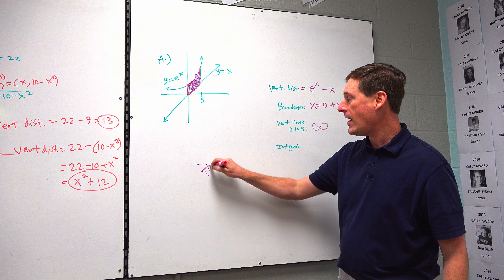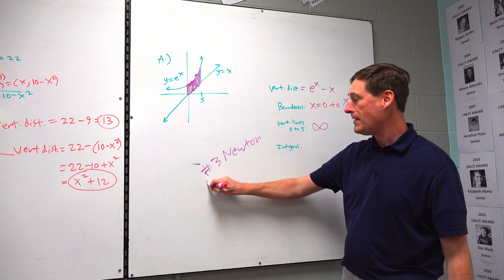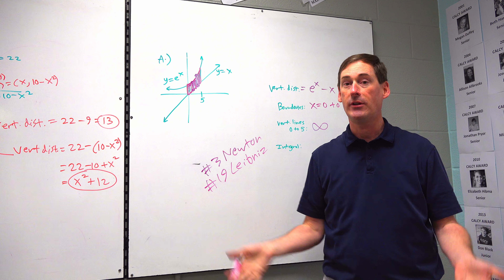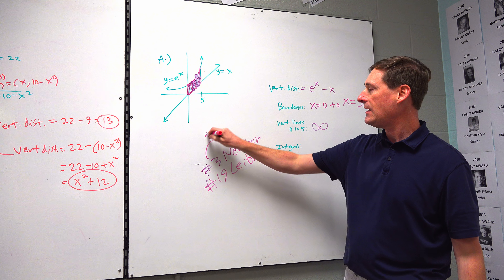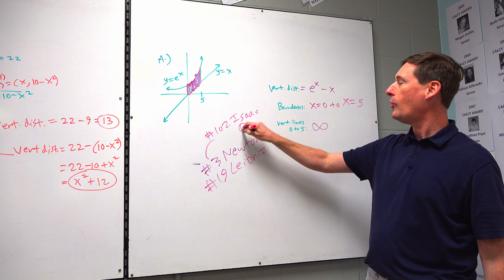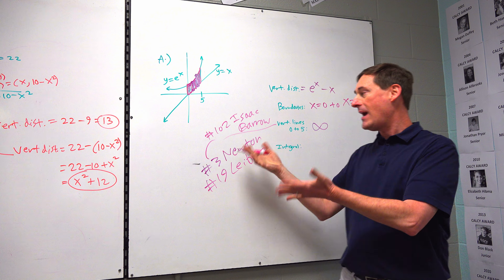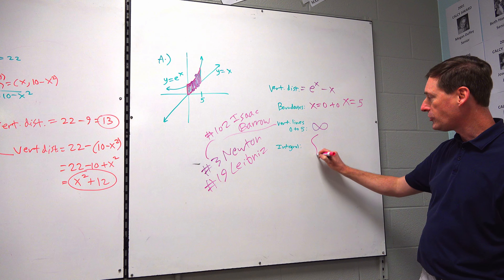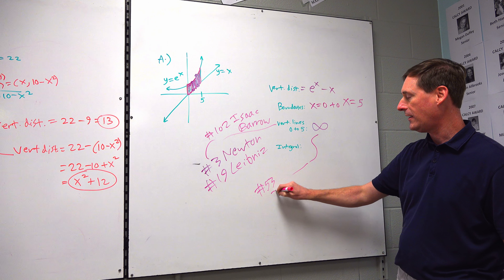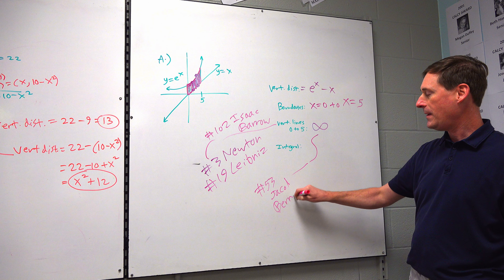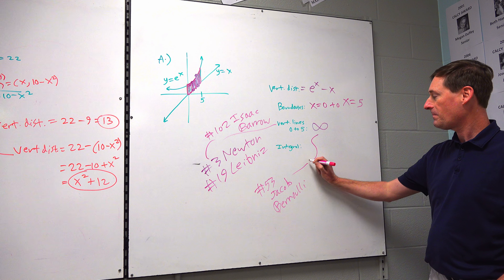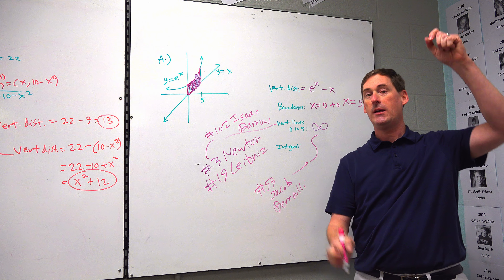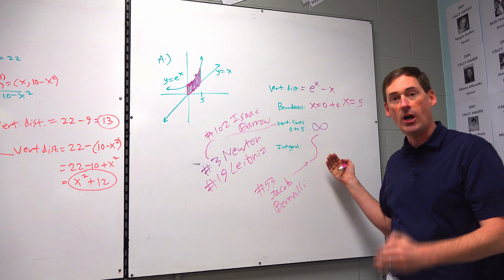Who came up with integration? Number 3 ranked Sir Isaac Newton discovered it, and then about the same time, number 19, Gottfried Leibniz discovered it. Newton sued Leibniz, but they actually did independently discover calculus at the same time. Newton's professor, number 102, Isaac Barrow, technically came up with the first idea of integration. Newton developed it much farther, and Leibniz did too. Who came up with the integral symbol? That was number 53, Jacob Bernoulli — because of the Latin word summa, meaning sum. He took a capital S and stretched it.